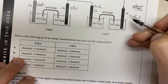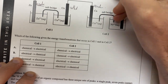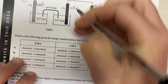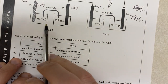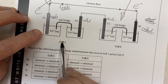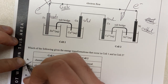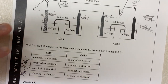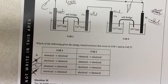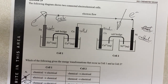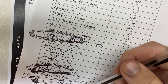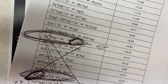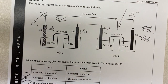So we have: electrons going into the electrolytic cell and electrons going out of the galvanic cell. Therefore we have chemical energy to electrical energy in cell one, and electrical energy to chemical energy in cell two. So the answer must be C. The key question is: can they be galvanic cells based on the electrochemical series, or do they have to be electrolytic cells? Do we have a downhill slope making a galvanic cell, or an uphill slope making an electrolytic cell?